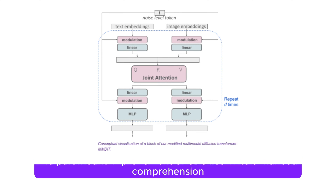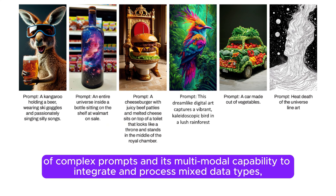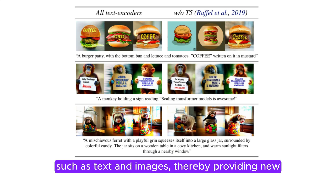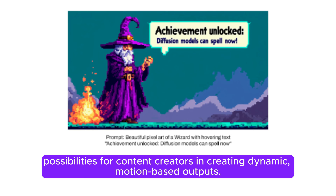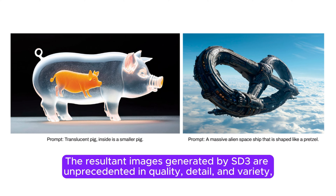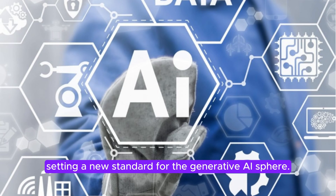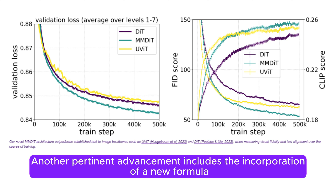The paramount improvement of SD3 lies in its enhanced comprehension of complex prompts and its multimodal capability to integrate and process mixed data types such as text and images, thereby providing new possibilities for content creators in creating dynamic, motion-based outputs. The resultant images generated by SD3 are unprecedented in quality, detail, and variety, setting a new standard for the generative AI sphere.